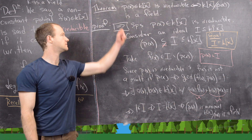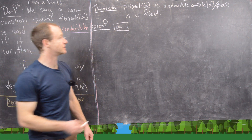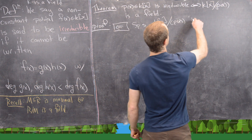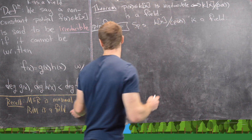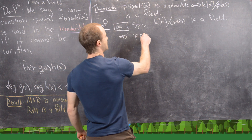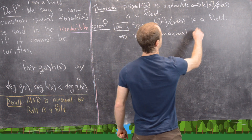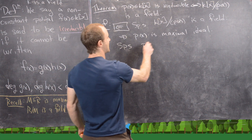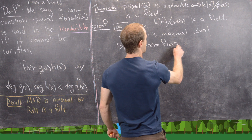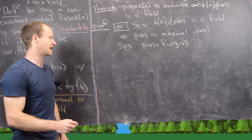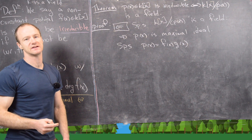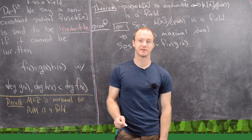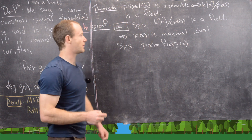I'll clean up the board and then we'll do the other direction. So now we're ready for the other direction. Suppose that k[x] mod the principal ideal (p(x)) is a field. Using this result, that tells us that (p(x)) is a maximal ideal. Now suppose that p(x) = f(x) · g(x), so we have factored p(x). What we want to show is that one of those factors is a constant, which would mean the factorization failed except when one of them is constant — meaning p(x) is irreducible.